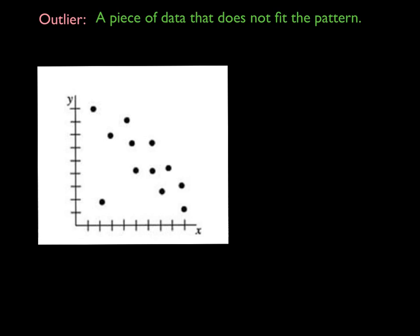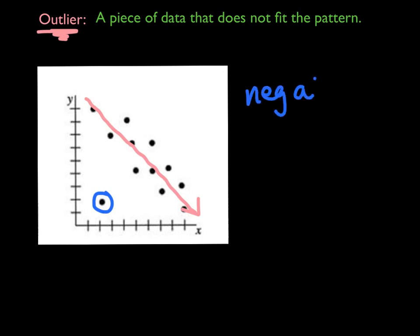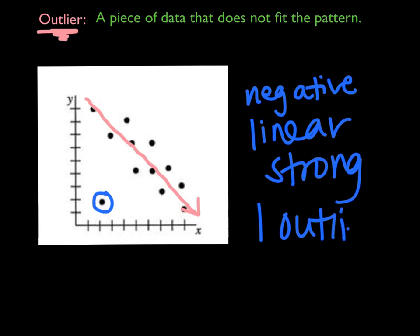The second to last thing you always want to describe when you have a scatter plot is if there are any outliers. When you're looking at two sets of data, a lot of times they'll relate really well to each other, but there'll be one piece of data that doesn't relate to all the others — it's not even close. That's called an outlier. So if you look at this one, it looks like it's going down, it's linear, it's negative, and the points are pretty close — a good strong correlation — but there's one point that kind of stands out. That's called an outlier. It's a point that doesn't fit the pattern of all the other points. You'd say it has one outlier and can give the coordinates, like about (2, 2), or circle it somehow.